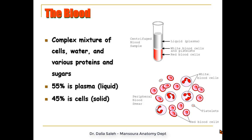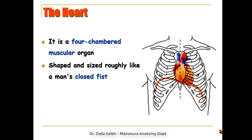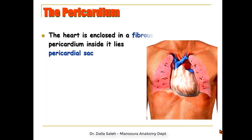Red blood cells, white blood cells, and platelets make up the solid component. The heart is a four-chambered muscular organ, shaped and sized roughly like a man's closed fist. It lies inside the thorax between the two lungs, superior to the diaphragm, and slightly to the left of the midline.